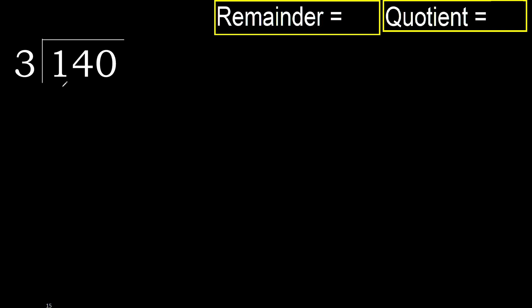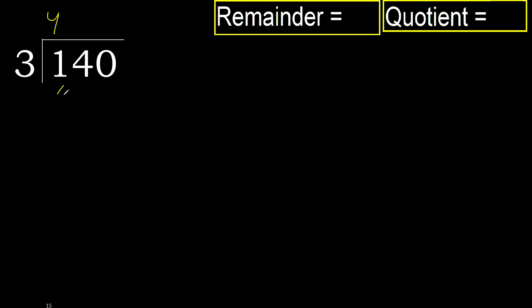140 divided by 3. 1 is less, therefore next. 14 is not less, therefore work with 14. 3 multiplied by which number is nearest to 14 but not greater? 3 multiplied by 5 is 15 — that is greater. 3 multiplied by 4 is 12 — that is not greater. 14 minus 12 is 2. Next.